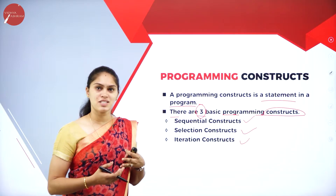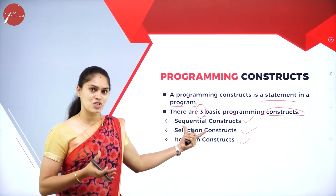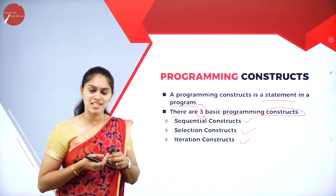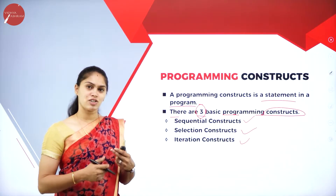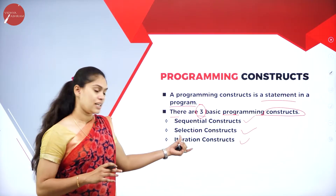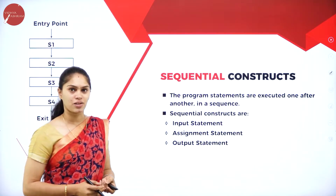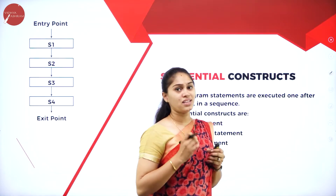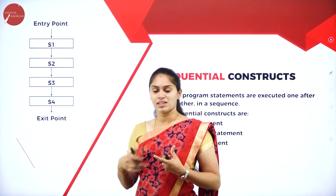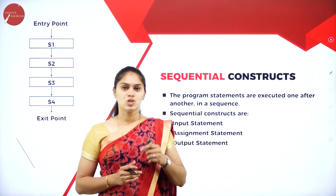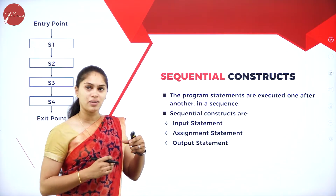In a sequential construct, statements are executed one after another in a linear manner — no backtracking or looping. In a selection construct, more than one path exists; based on a test condition, we choose which path to follow. In an iteration construct, a set of statements is repeated again and again.